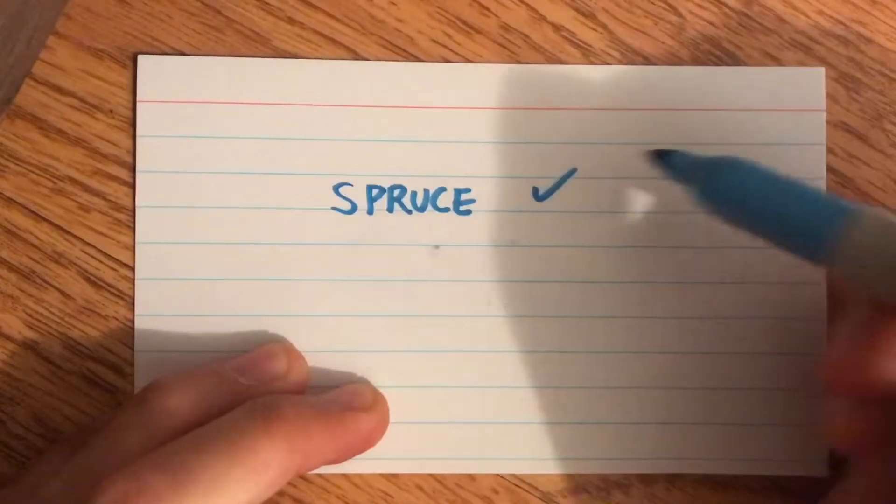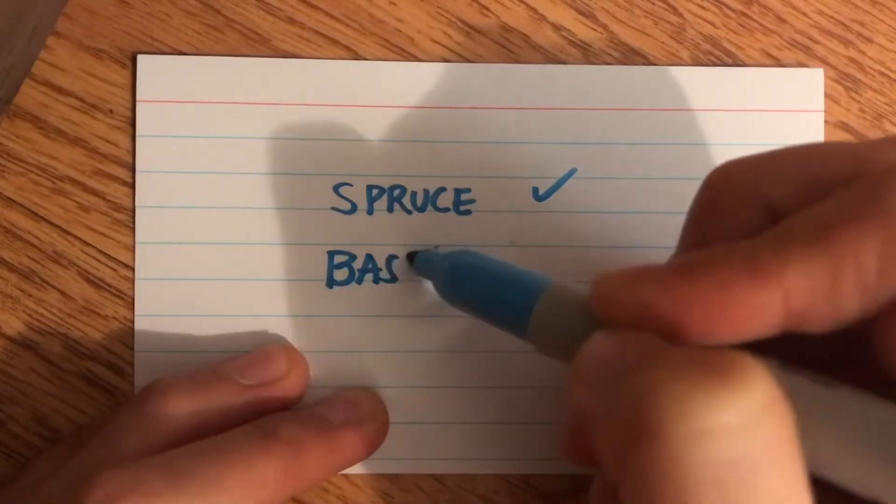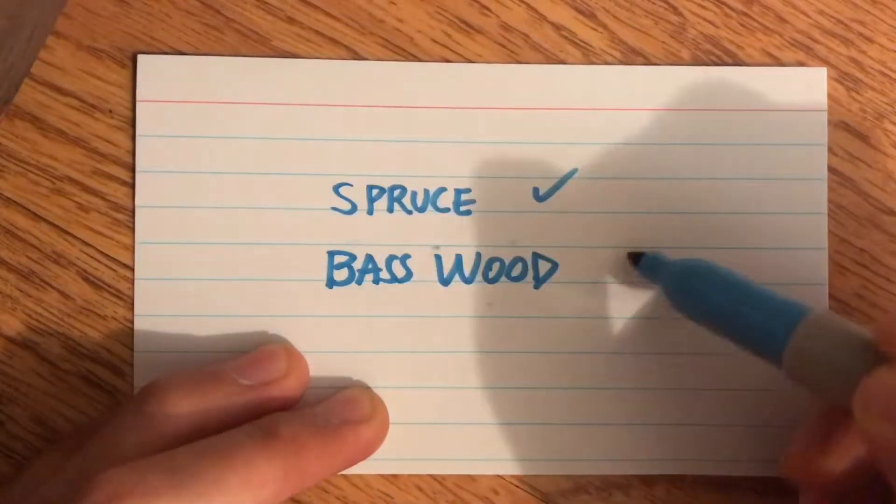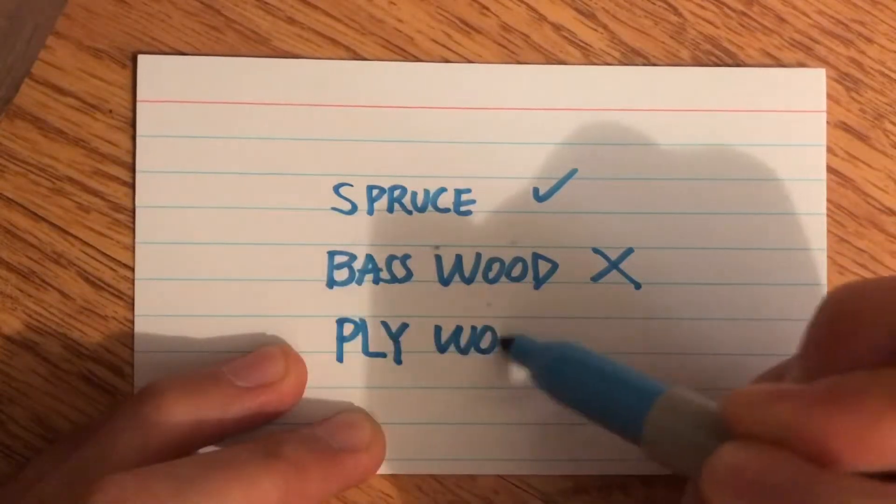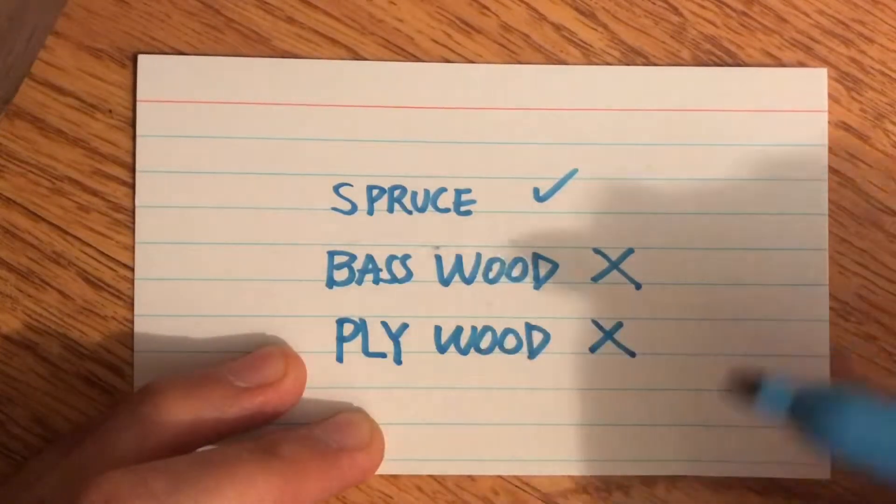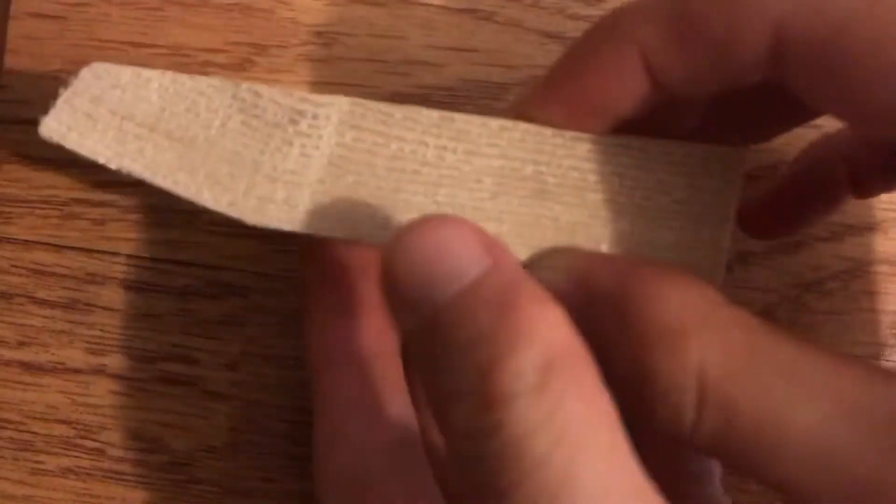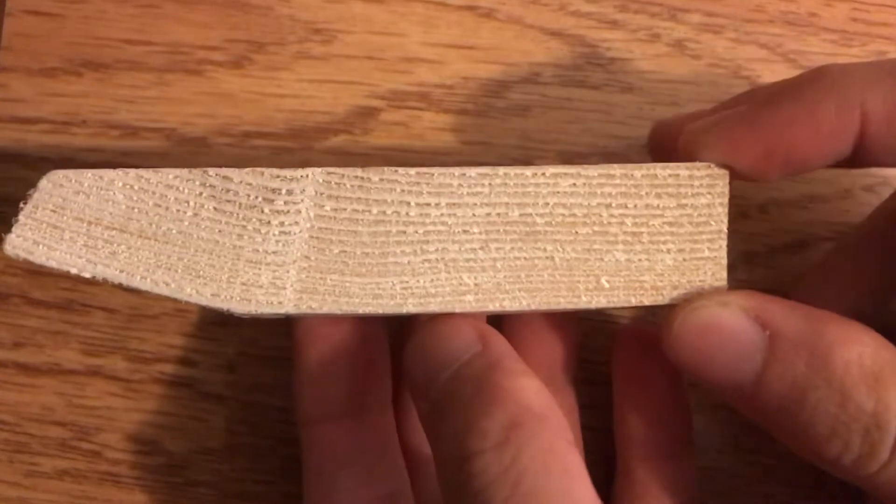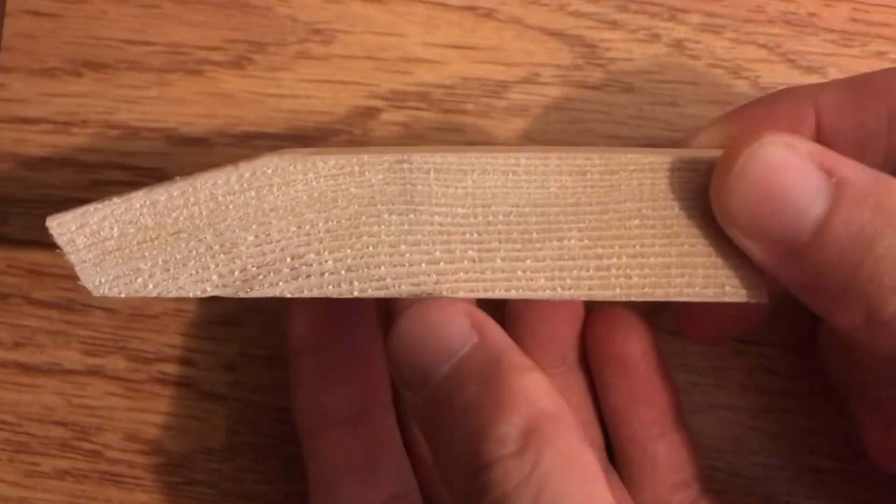Spruce is porous and is perfect for the top. Basswood is not good because it doesn't have pores. Plywood is even worse than the basswood because it's layered. So here's the spruce. It's got lots of air pockets, pores, uneven surfaces because of pores.